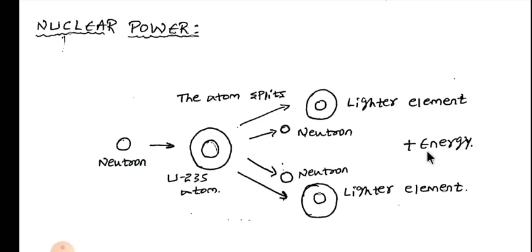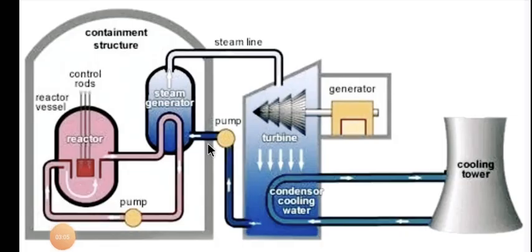The energy obtained from the chain reaction is used to boil water to form superheated steam. Now we will see how the nuclear power plant works. The sketch you are seeing on the screen is a nuclear power plant.